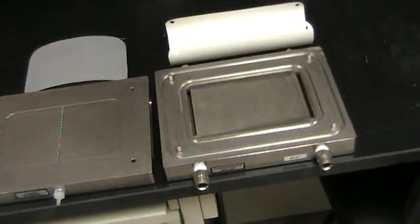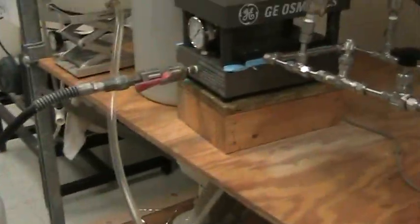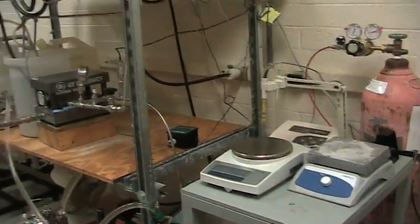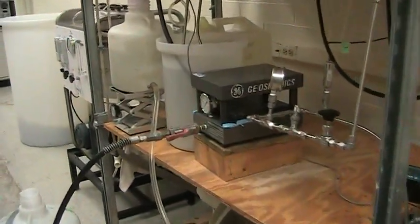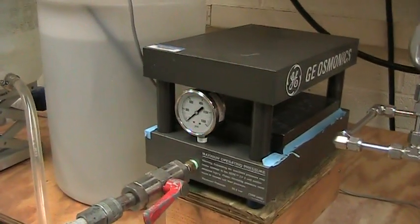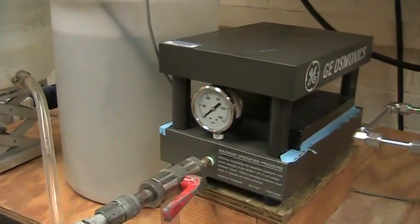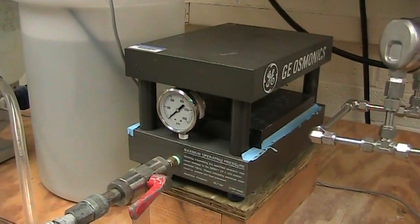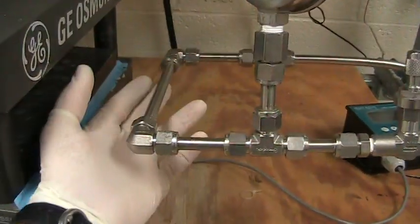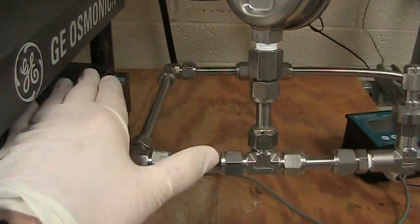So we take this membrane test cell over to our big system. It's not pretty, but it's highly functional. Here's our GE Osmonix test cell. We take that cell holder and we squeeze it in there at about 1200 PSI to get those O-rings with a nice seal. And then we'll take this bar out of the middle and we'll connect that cell holder up.